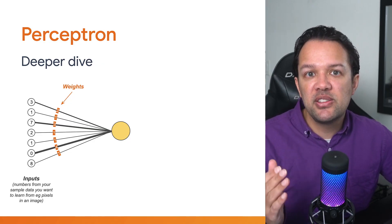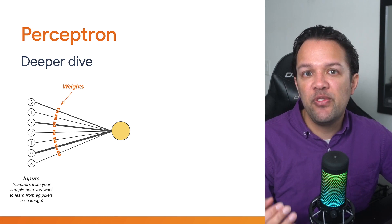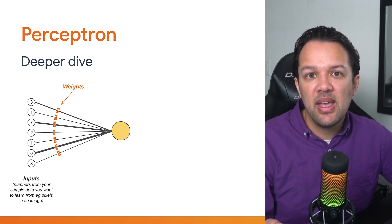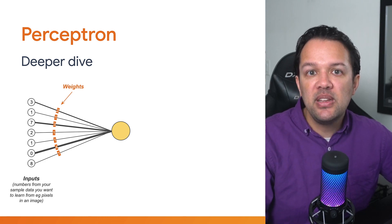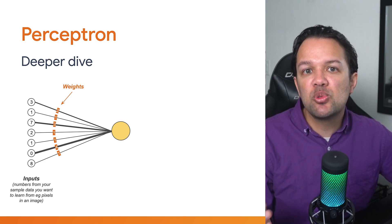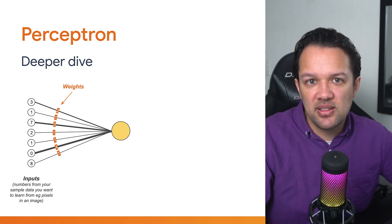Next, each input is associated with something called a weight. You can visually see how the inputs with thicker lines have a higher weight, and will end up contributing more to whatever's being calculated. Now initially, before the perceptron is trained, these weights are just randomly chosen numbers, like the ones shown here. So this is just a starting point.